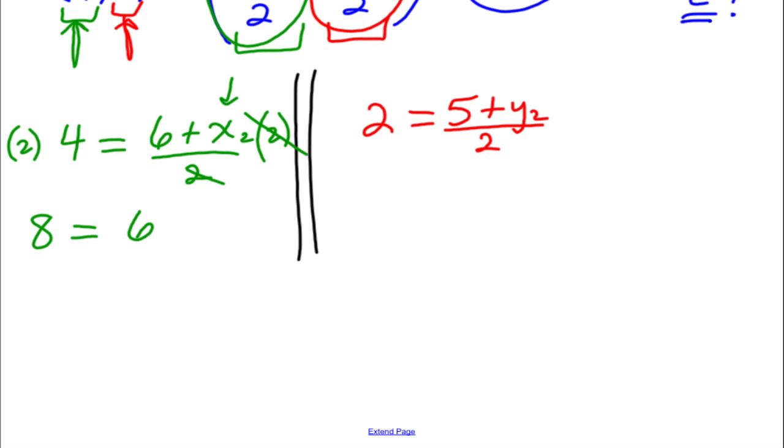So now we have 8. 2 times 4 is 8, equals 6 plus X2, which hopefully starts to look a little bit easier. We want to isolate X2. We want to subtract 6 from both sides. So 8 minus 6 is 2. 6 minus 6 cancels out. So we have the fact that 2 equals X2.